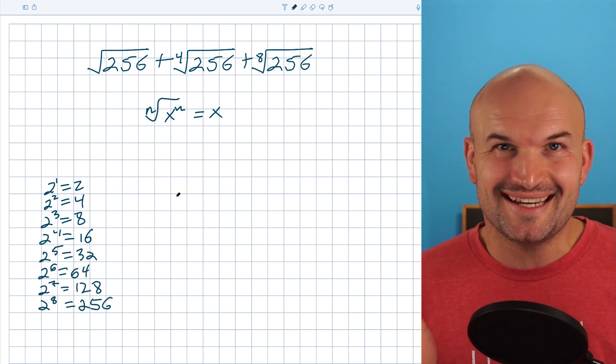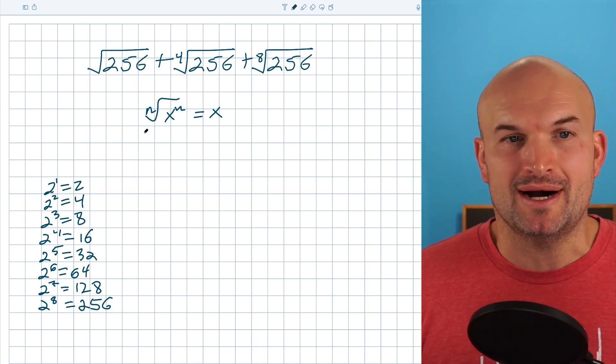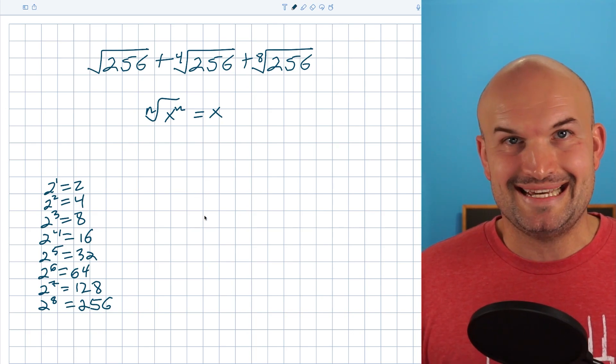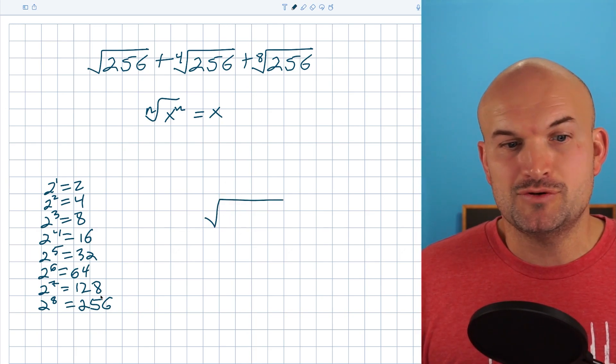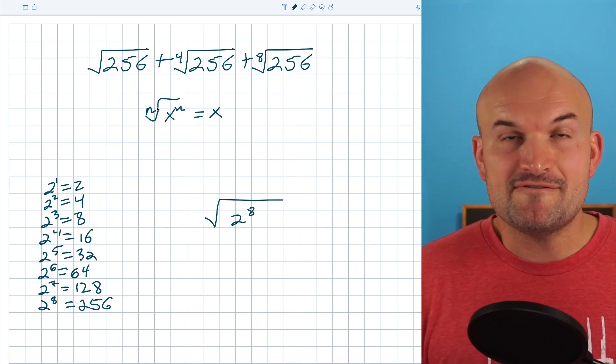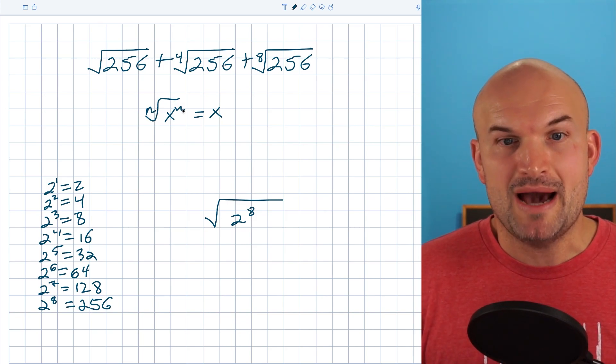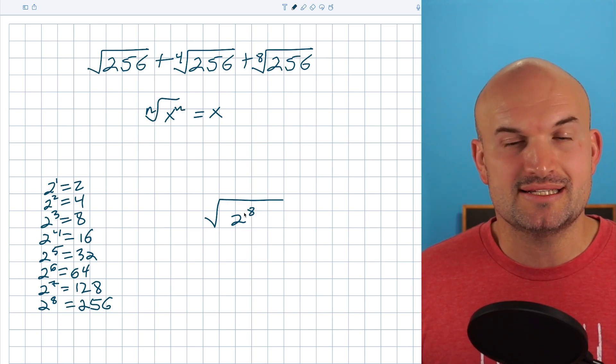Okay. So now here's how we can kind of manipulate this to kind of get what we want. Now, again, let's pretend we have no idea that that'd be the case, or that's even a good guess. So let's pretend we have 256. Now that's raised to the eighth power. Now following this understanding that the nth root of x raised to the nth power, we need this to be raised to the second power.